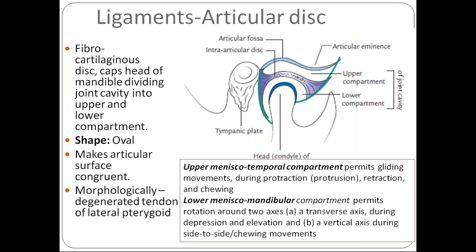Regarding attachments of the articular disc: peripherally it is attached to the fibrous capsule; in front it blends with the lateral pterygoid. Posteriorly, it splits into two lamellae. The upper lamella is attached to the squamotympanic fissure, and the lower lamella is attached to the posterior surface of the neck of the mandible. In between the two lamellae there are venous plexuses.